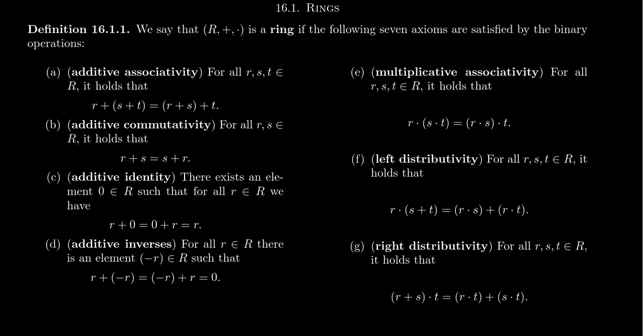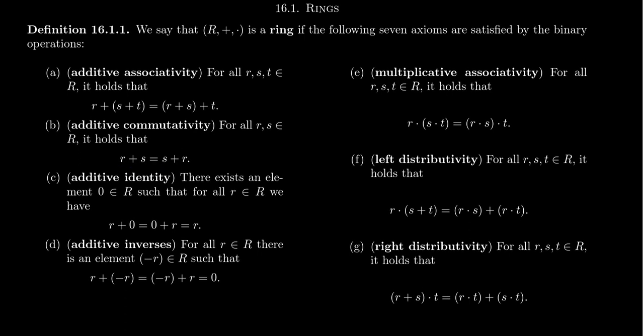For a ring, we require eight axioms. First, addition must be associative: for any elements R, S, and T, we have (R plus S) plus T equals R plus (S plus T). Second, addition must be commutative: R plus S equals S plus R. Whenever we use additive notation, it's always inferred that the operation is commutative. Non-commutative addition would be too taboo — addition should always be commutative.